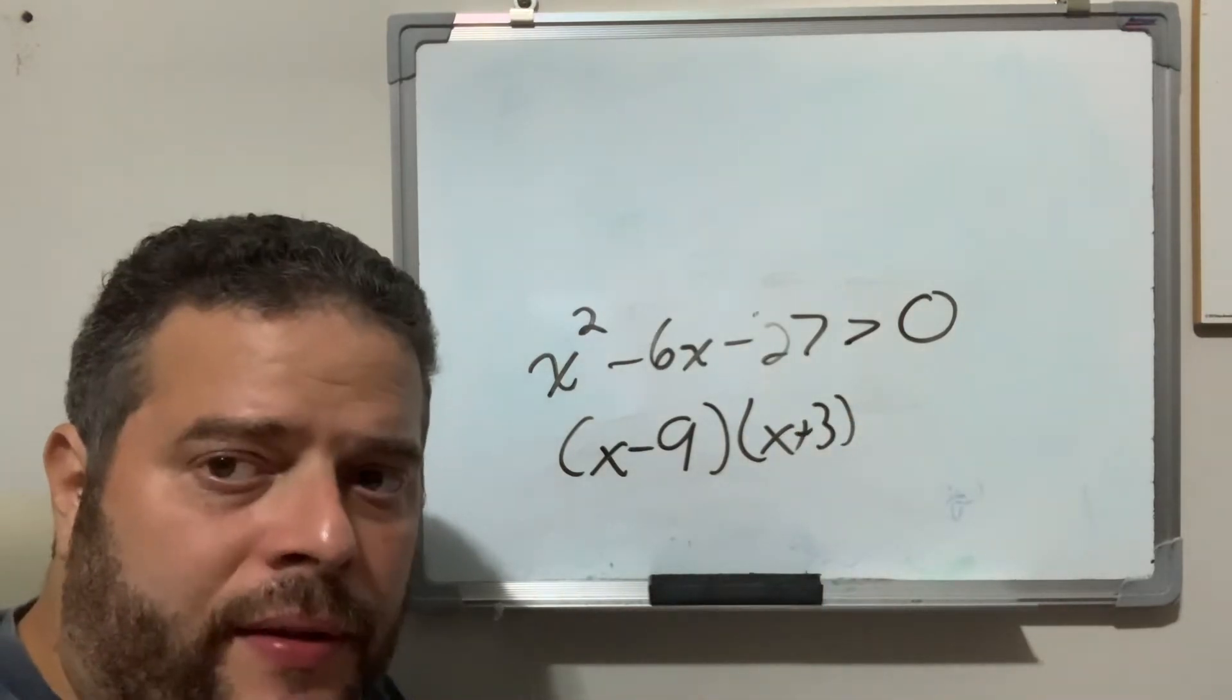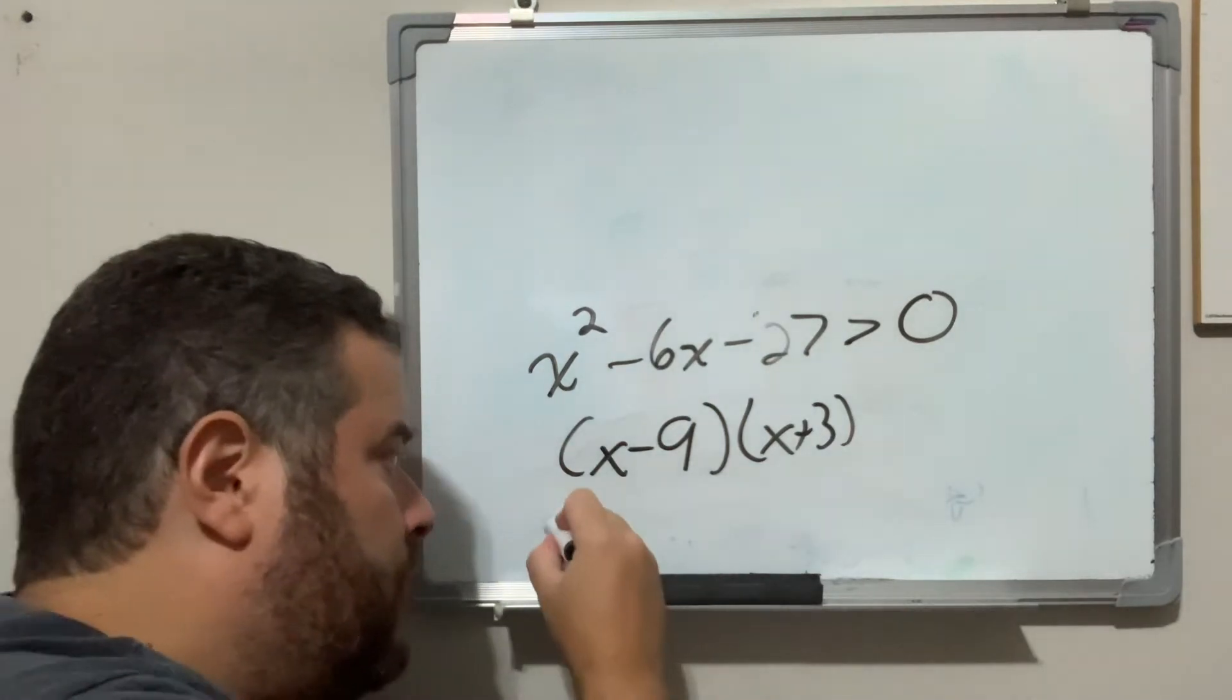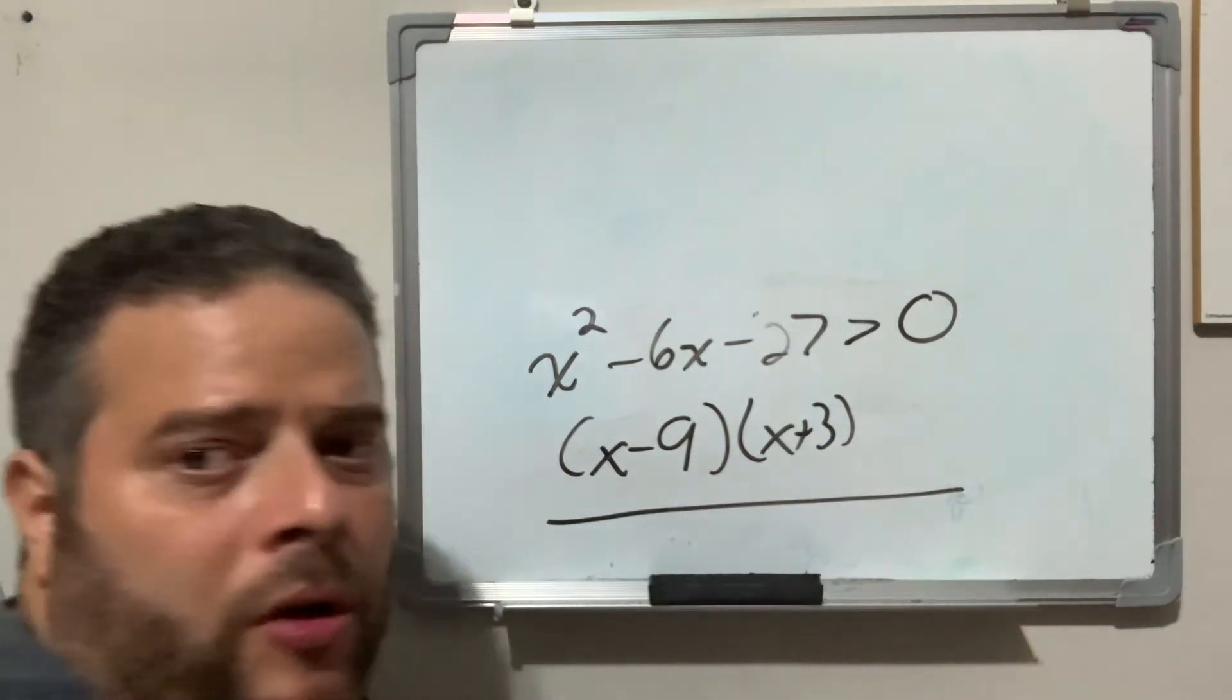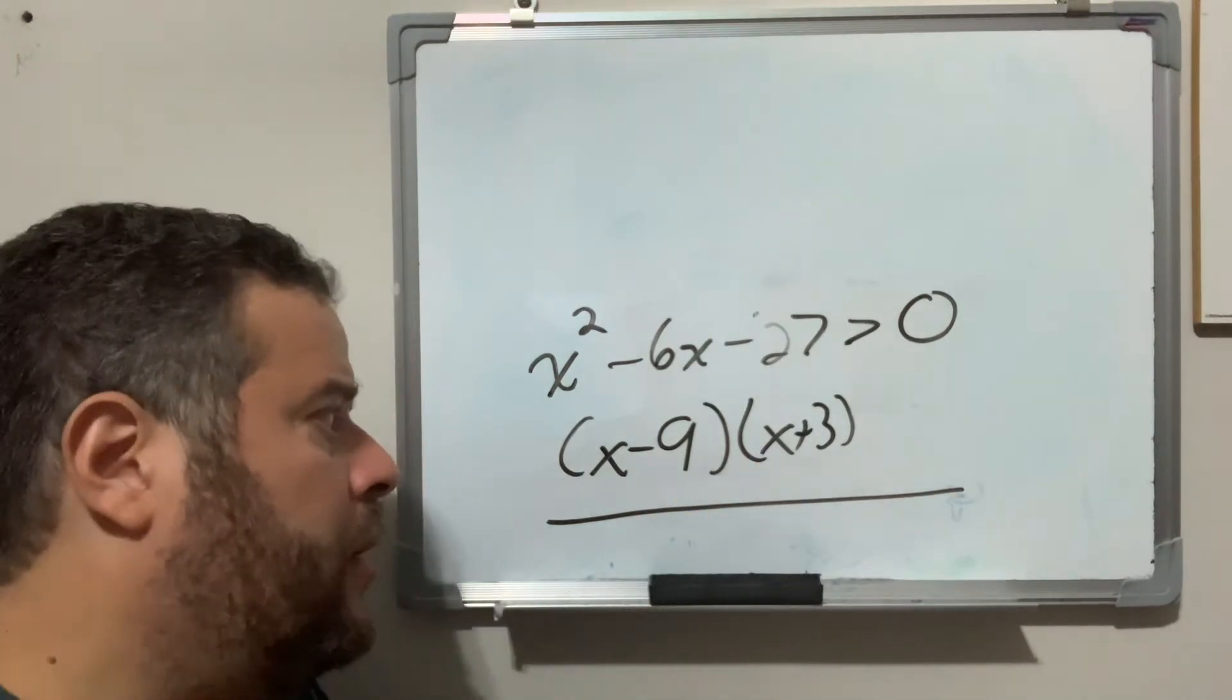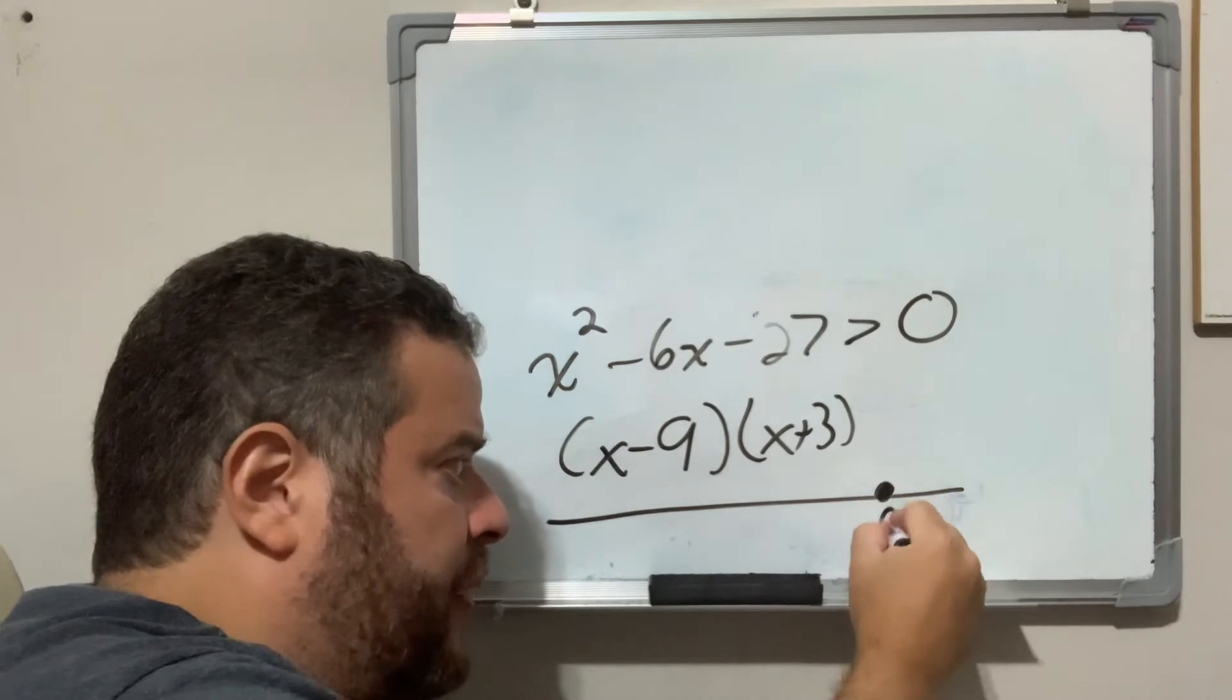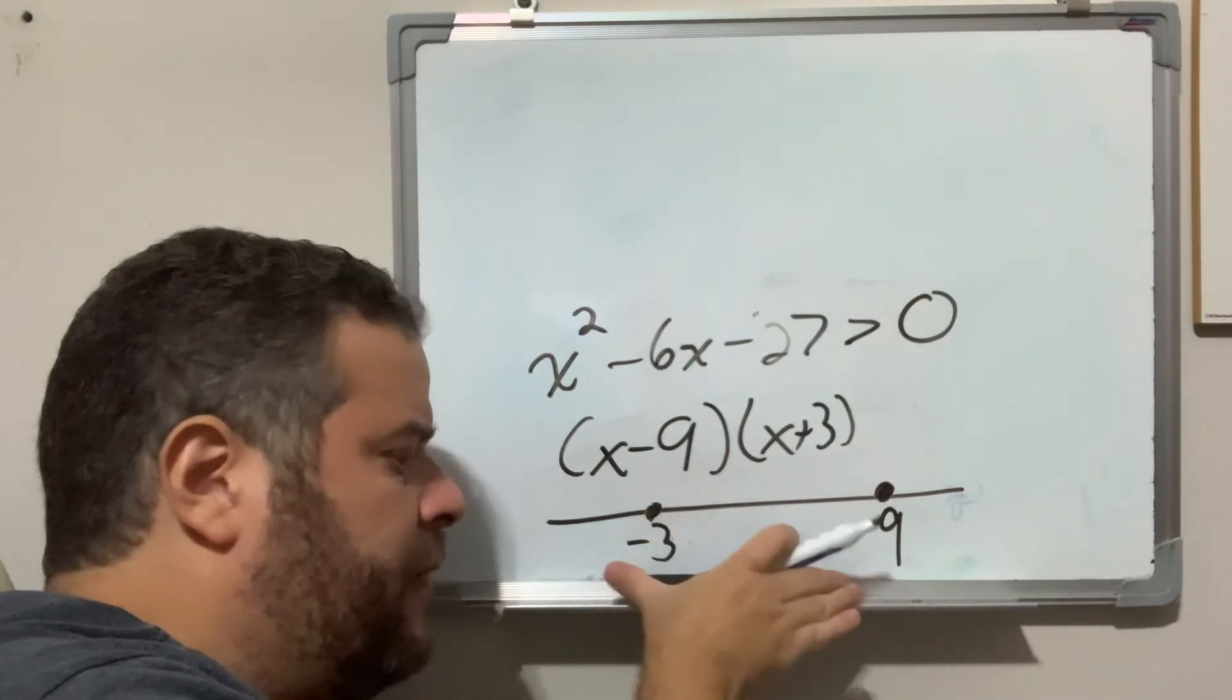Now when we're dealing with inequalities, the only difference is, now we actually do a number line, and you put the zeros on that number line. The zero would be positive 9, this zero would be negative 3.